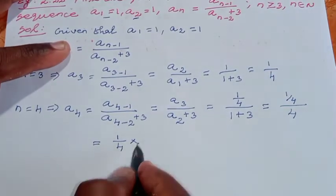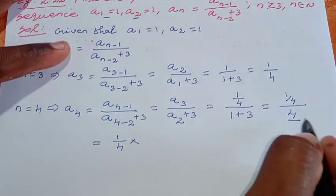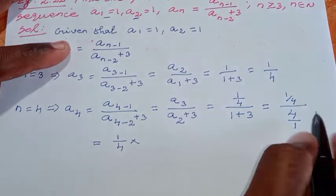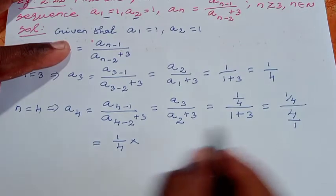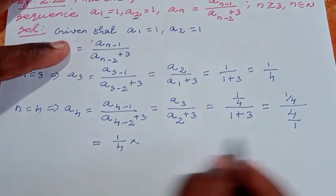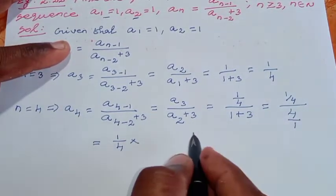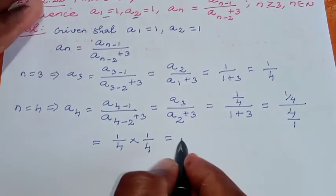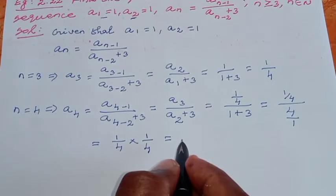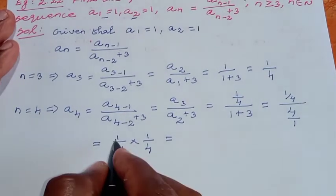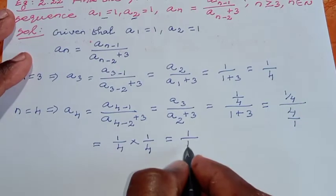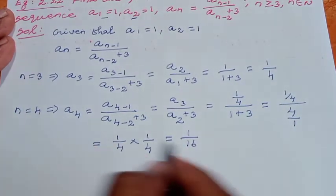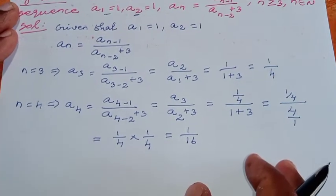This equals 1/4 divided by 4. When dividing fractions, we multiply by the reciprocal, so 1/4 × 1/4 = 1/16. This is the fourth term, a₄ = 1/16.